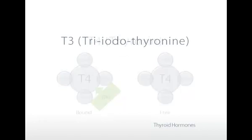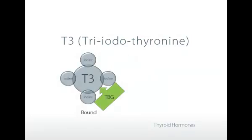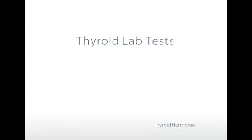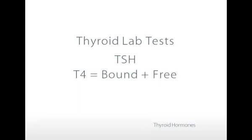The next hormone is T3, known as tri-iodothyronine. It has three atoms of iodine. T3 is the thyroid hormone which primarily stimulates the metabolism of the various cells of the body. T3 can also be bound to a protein or it can be free. For the different thyroid hormones we have different lab tests: one for TSH, one called T4 which is the bound and the free, and the free T4 — because we want to know how much T4 is actually free and available to make free T3.